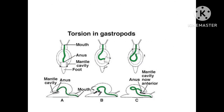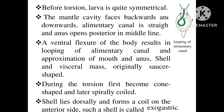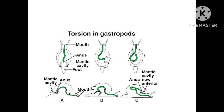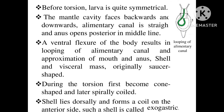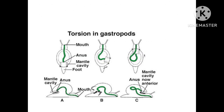A ventral flexure of the body results in looping of the alimentary canal — that is, a U-shaped portion of the alimentary canal — and approximation of mouth and anus. The shell and visceral mass, originally saucer-shaped, first become cone-shaped and later spirally coiled. The shell lies dorsally and forms a coil on the anterior side. Such a shell is called an exogastric shell.